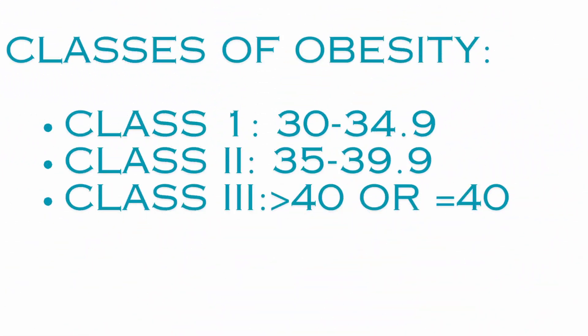A BMI greater than or equal to 30 means you are obese. Obesity itself can be mild, moderate, or severe, reclassified into three classes: Class 1 is BMI 30 to 34.9, Class 2 is 35 to 39.9, and Class 3 is greater than 40.